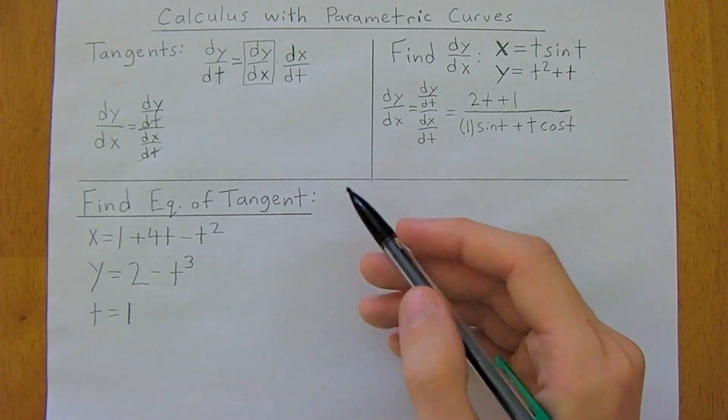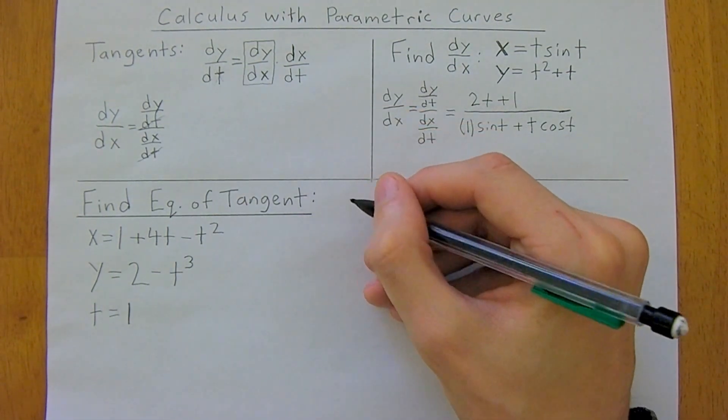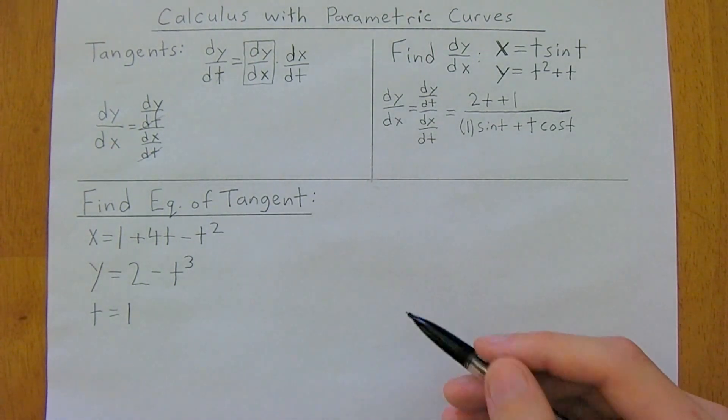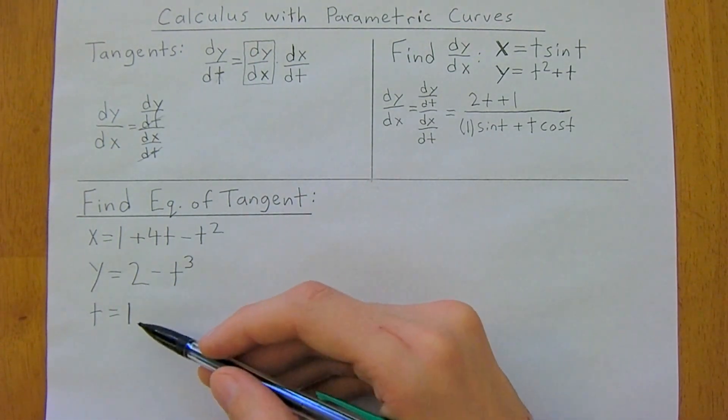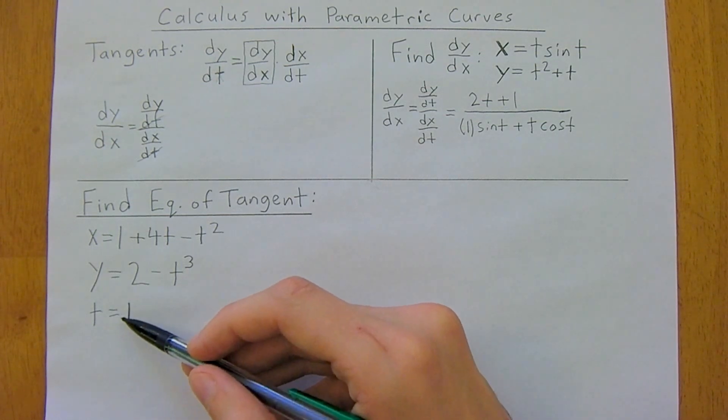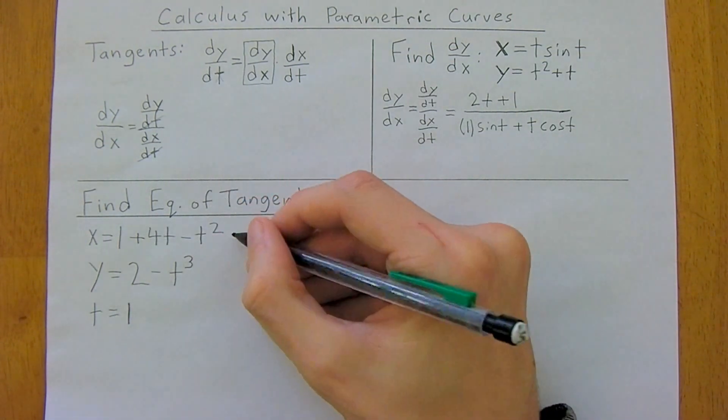So to find an equation of a tangent, there's two things we need. We need a point on the line, and we need to figure out the slope. And that should do it. So we're given t equals 1. So to get our point, we can just plug 1 in for t now in each of these equations.